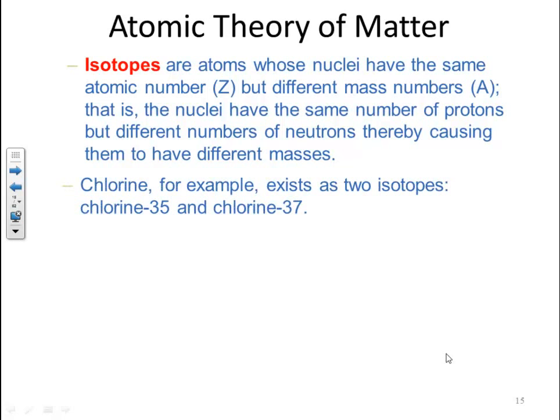Chlorine, for example, exists as two isotopes. You have chlorine-35 and chlorine-37.